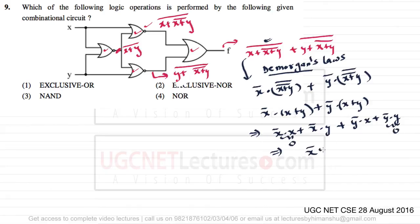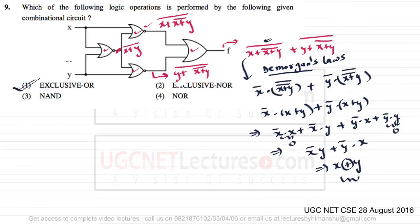So the equation reduces to X'·Y + Y'·X, which is X XOR Y. Therefore this complete circuit is just representing an exclusive OR, or XOR. So option number one is correct in this case.